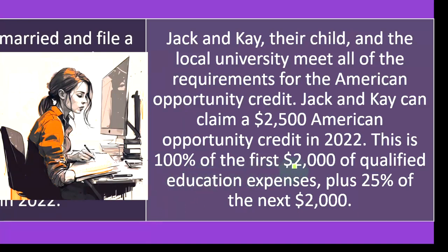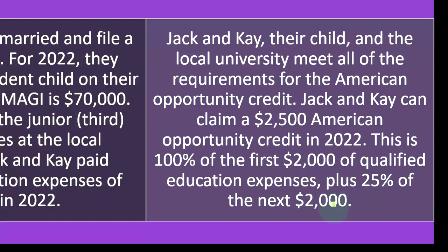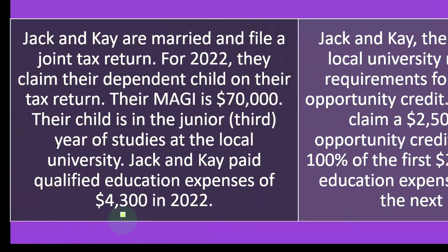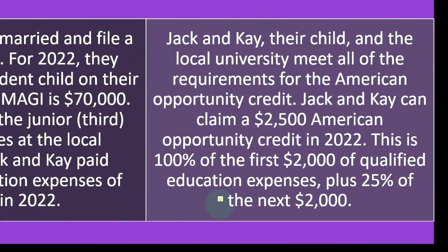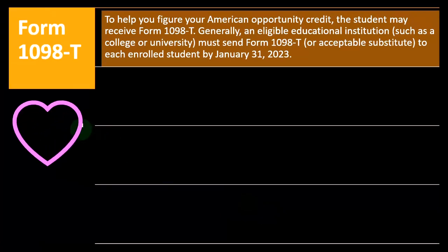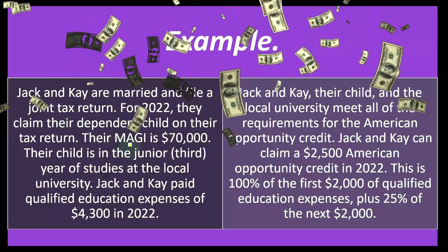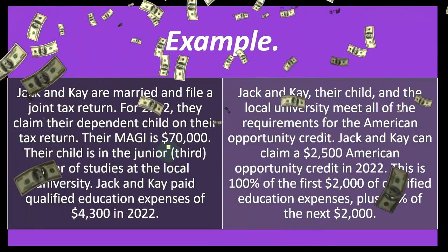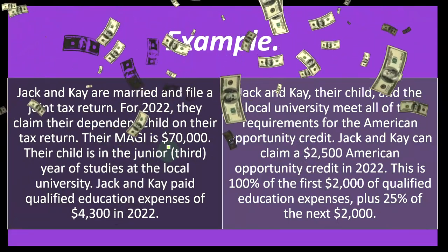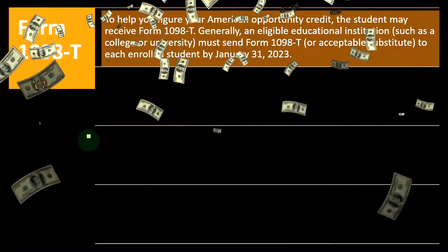This is 100% of the first $2,000 of qualified expenses plus 25% of the next $2,000. They paid $4,300, but that extra $300 didn't provide any additional credit benefit — the credit only applies to the first $4,000. They also did not hit the income threshold for the modified AGI at $70,000, so the credit was not reduced due to the AGI phase-outs.